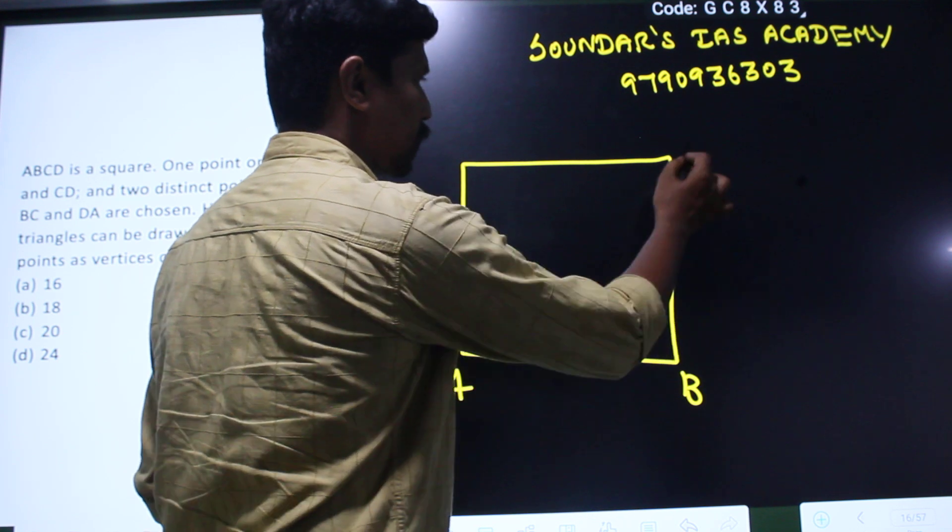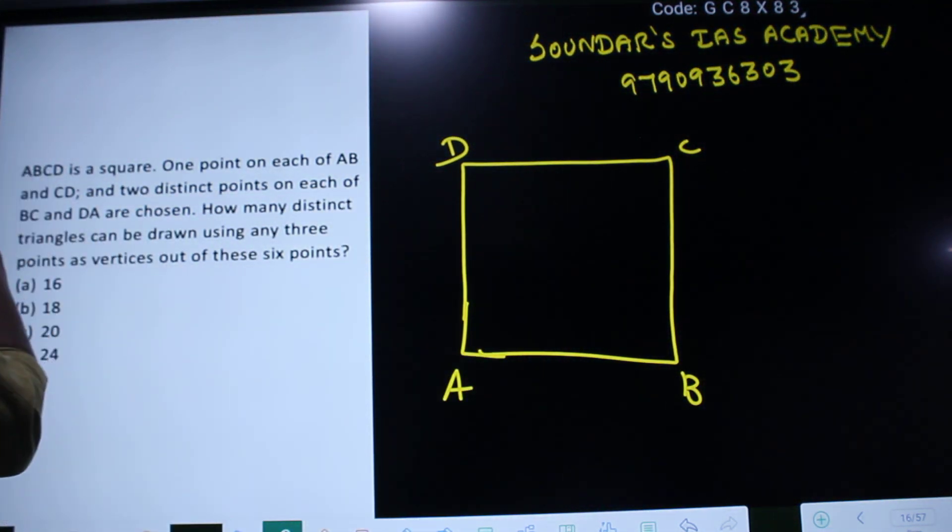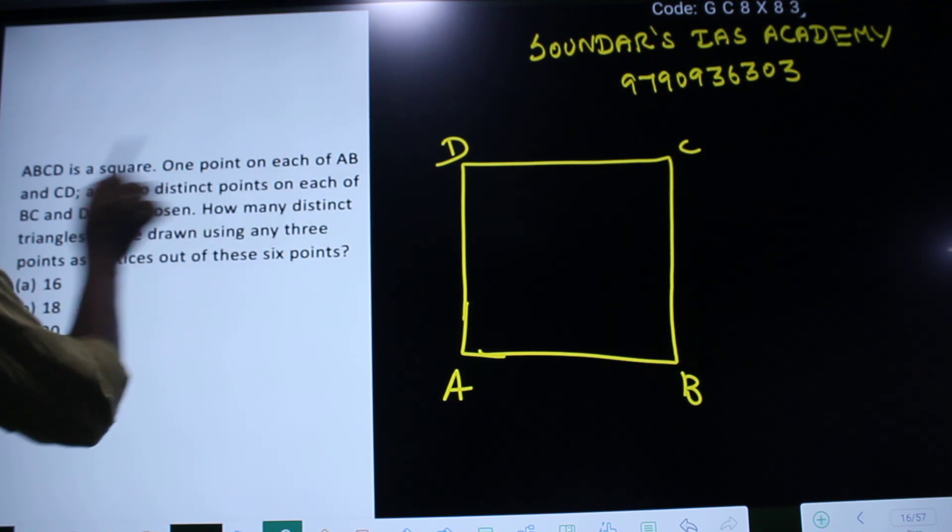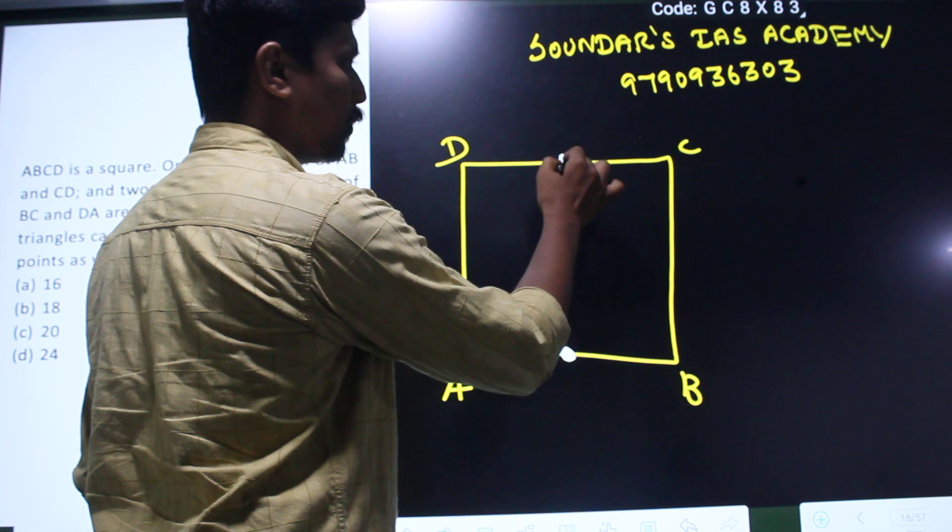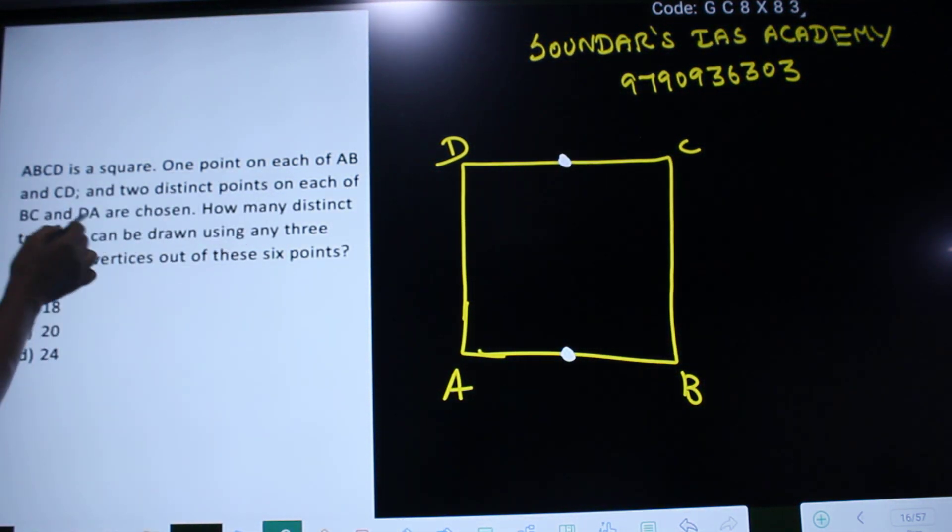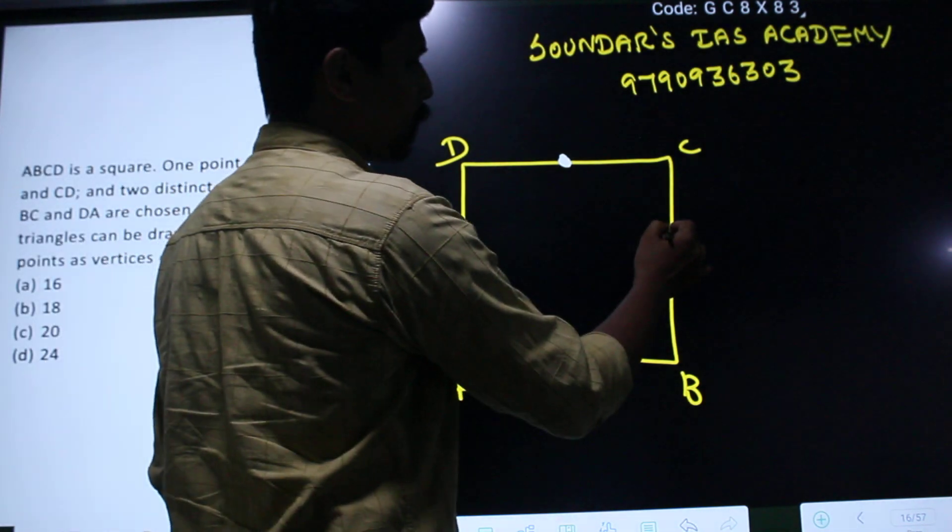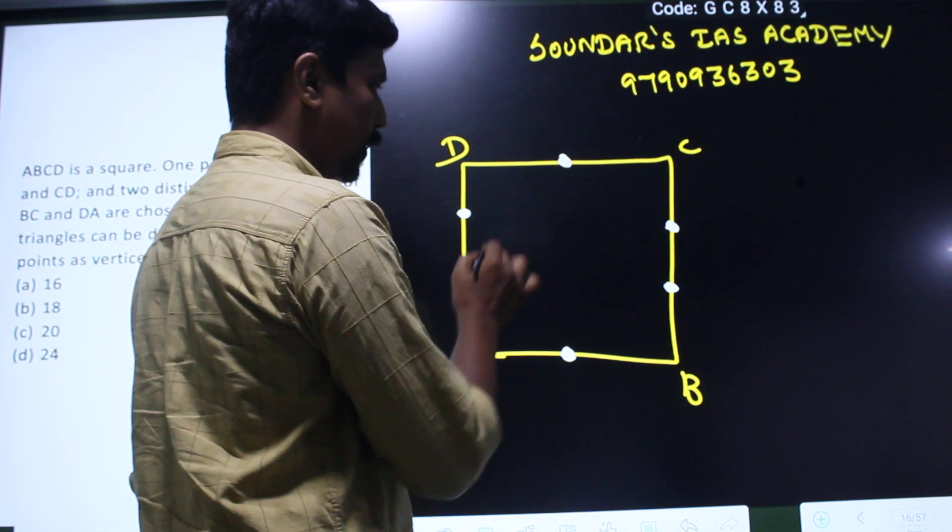ABCD is a square. One point on each of AB and CD. Two points on each of BC and DA. ABCD is a square.